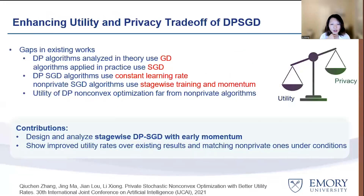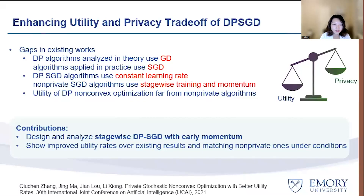In one of our recent works, we observed several gaps in existing differentially private deep learning frameworks — both in theoretical utility guarantees and in the algorithms not reflecting state-of-the-art training paradigms, such as stage-wise training with different learning rates for different stages. Existing privacy analysis typically assumes a constant learning rate. So in this work, we designed and analyzed a stage-wise DPSGD (Differentially Private Stochastic Gradient Descent) framework with early momentum, and showed it has improved utility rates compared to existing work. Importantly, it also achieves matching utility compared to the non-private models under certain conditions.